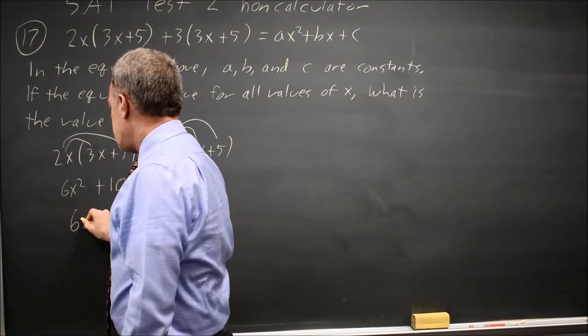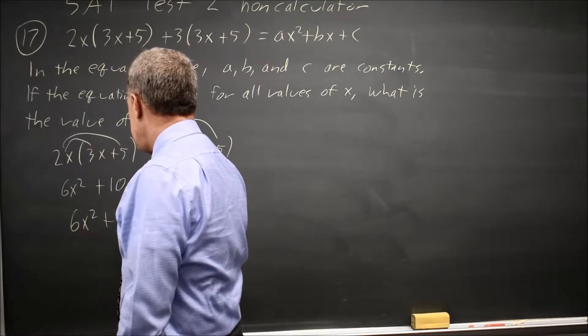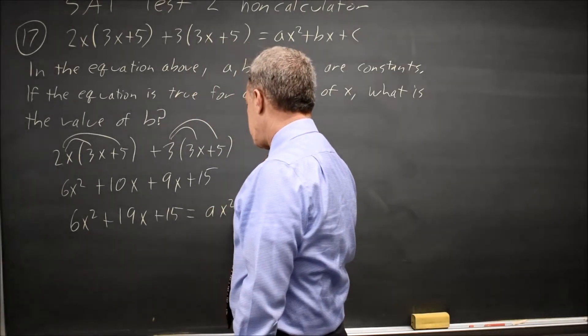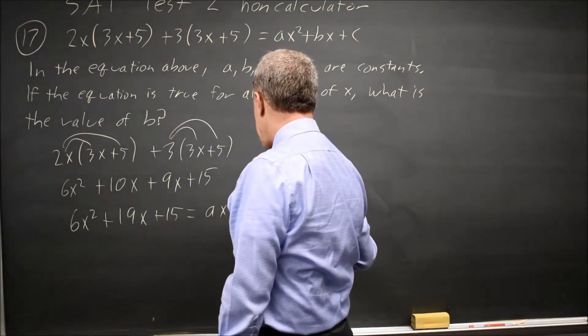This simplifies to 6x squared plus 19x plus 15, and we're told that equals ax squared plus bx plus c.